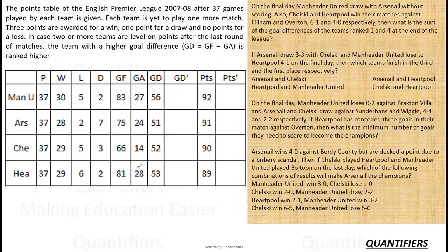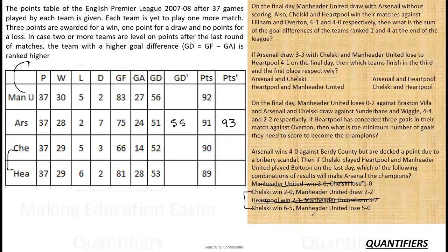For question 4: Arsenal win 4-0, giving them a goal difference of 55 and 94 points. But they are docked 1 point due to a bribery scandal, so their points become 93. Chelsea play Hartpool and United play Bolton. For Arsenal to become champions, United cannot win. Options with Manchester United winning are eliminated. In the remaining option, Manchester United lose so their points stay at 92, Chelsea win 6-5 reaching 91 points, while Liverpool remain unchanged. Option 4 directly gives Arsenal as champions, so option 4 is the right answer.